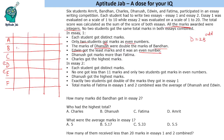Dhanush equals two times Bandhan, and Bandhan has to be odd. So Bandhan can be 1, 3, or 5, and accordingly Dhanush will be 2, 6, or 10. Since the essays are out of 10 marks and Charles got the highest marks, Dhanush cannot be 10. Also, Dhanush got more marks than Fatima, so taking 1 and 2 doesn't allow Fatima to be less than Dhanush. The only possibility is Bandhan gets 3 and Dhanush gets 6.